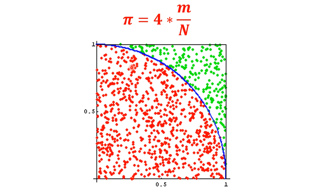This is the enlarged view of the figure. The quarter of the circle is shown with points inside the circle in red and points outside in green. Small m is the number of red points and capital N is the total number of points — red plus green.